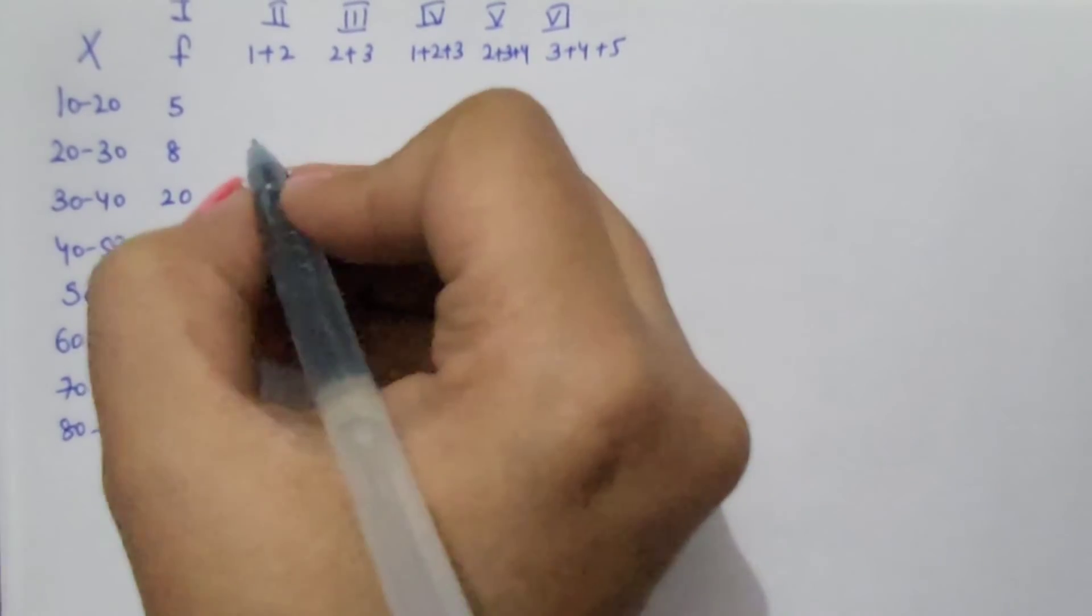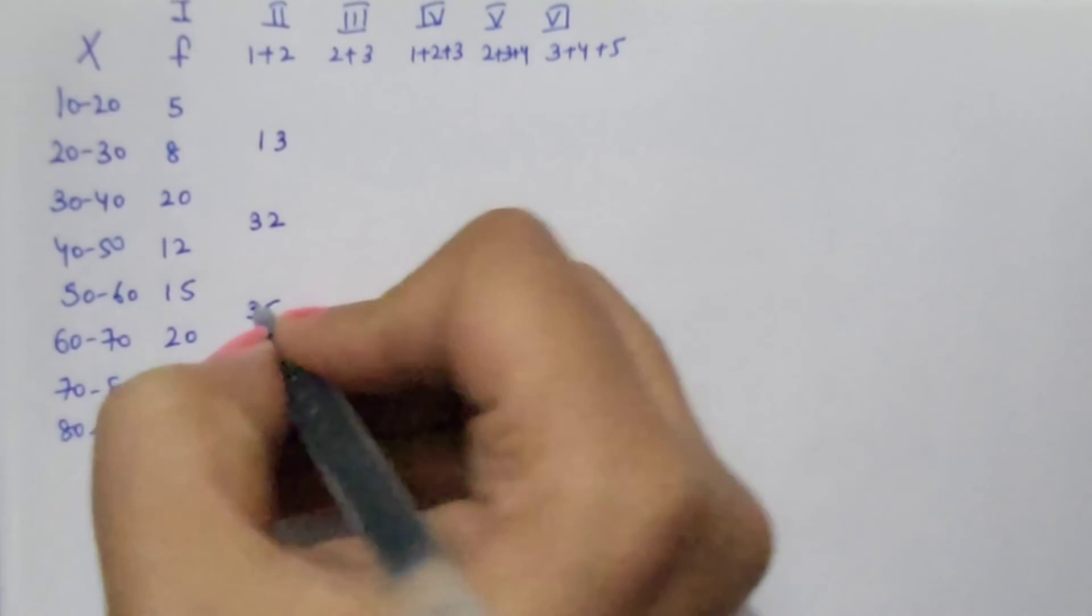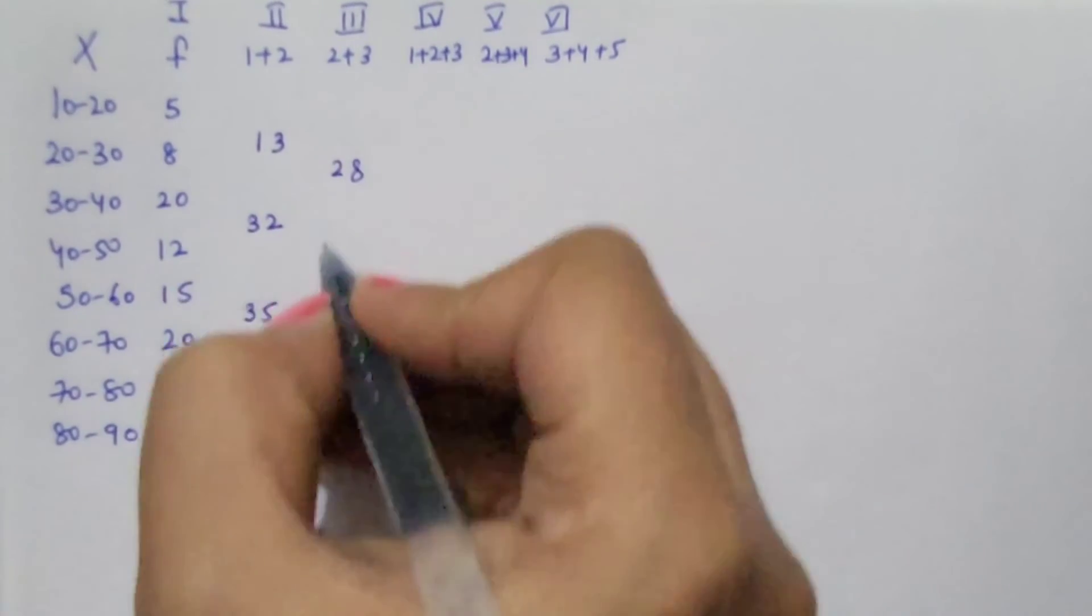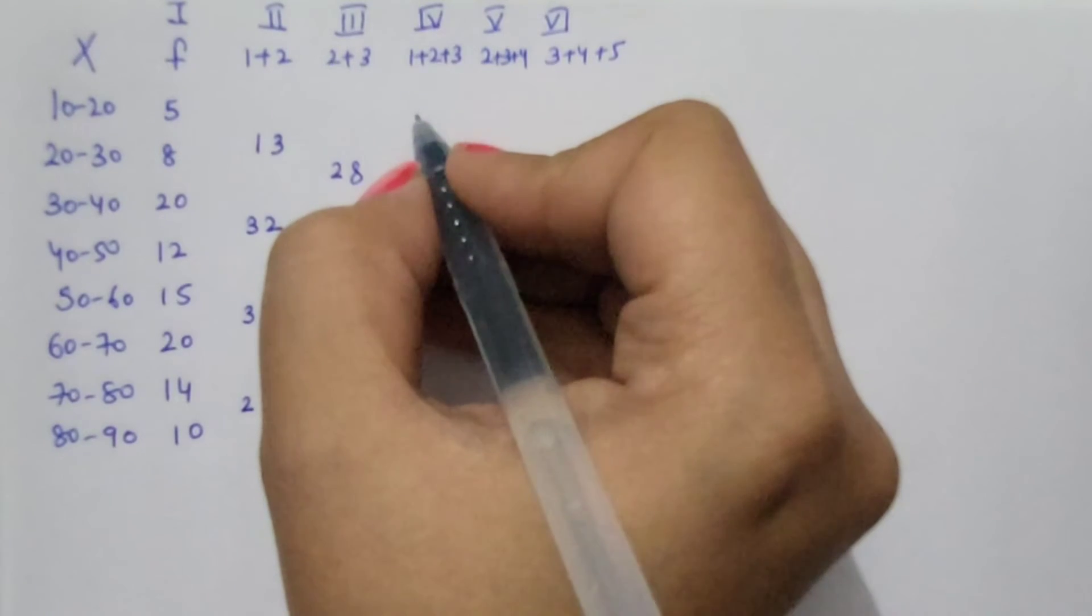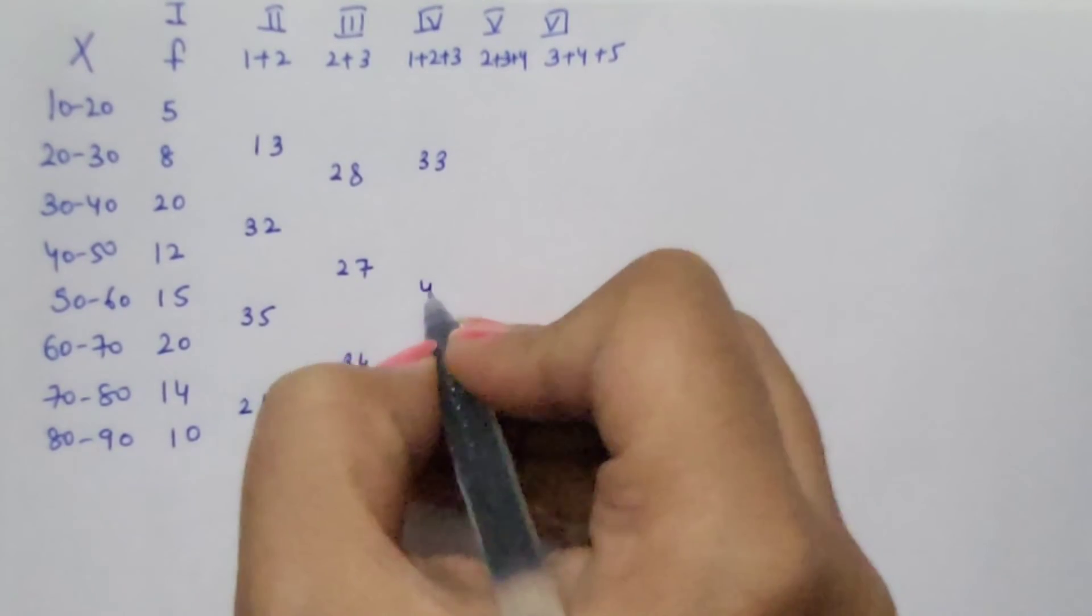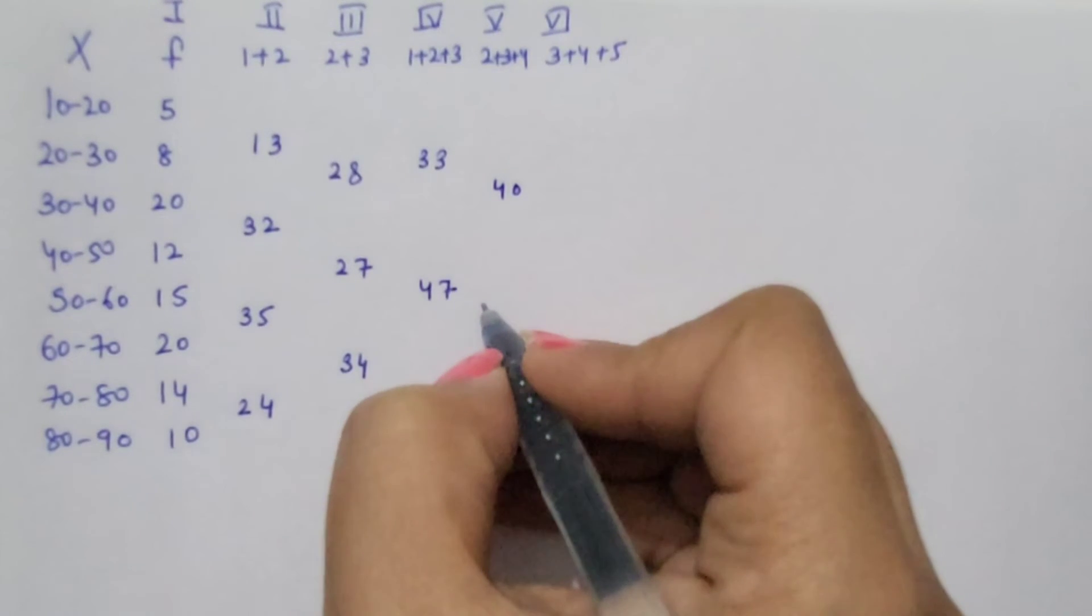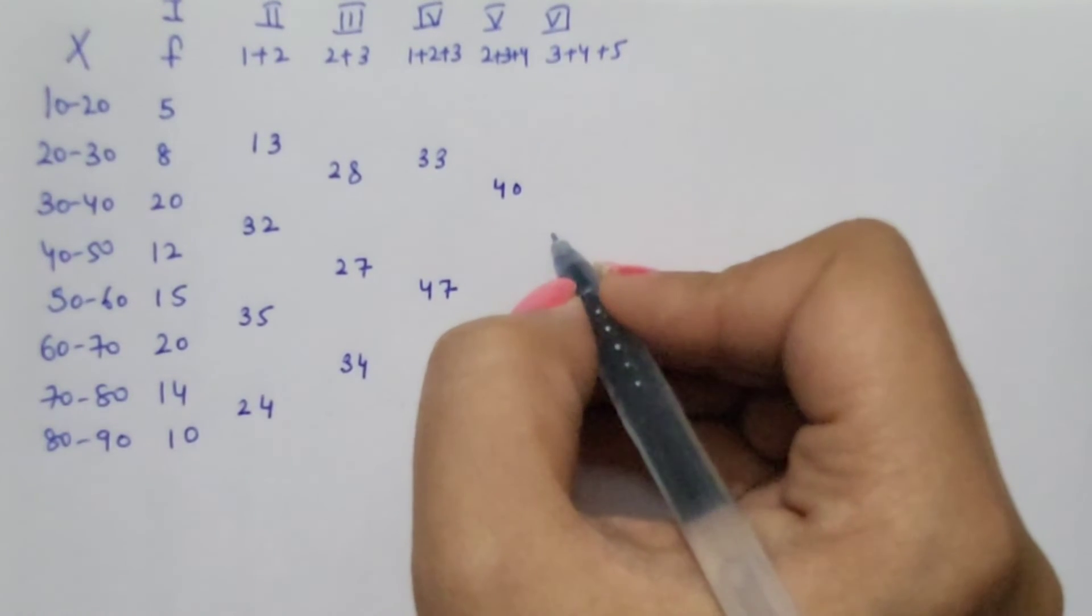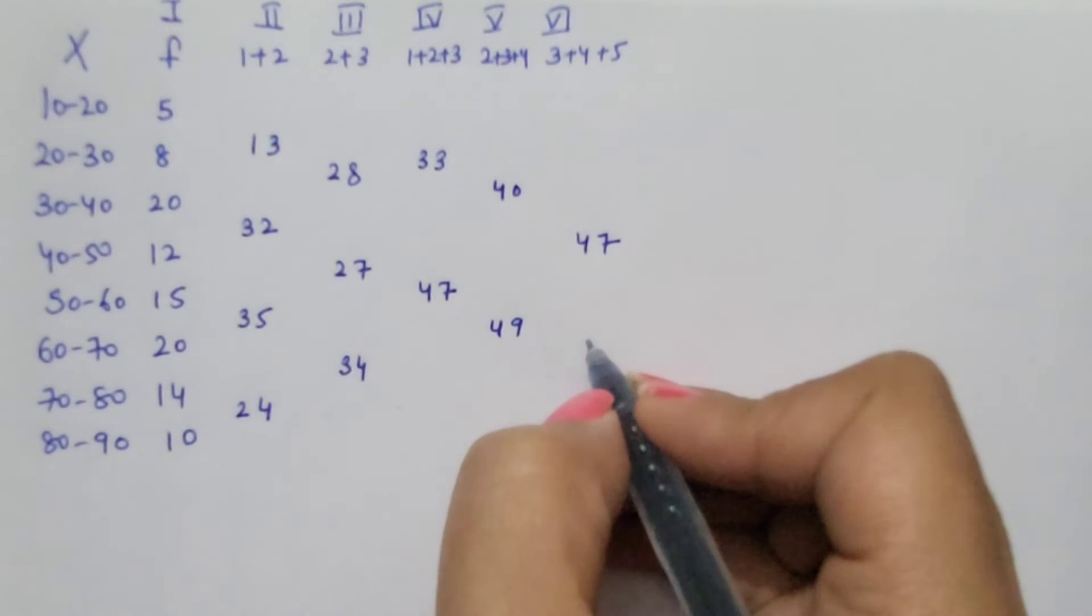First and second item: 5 and 8, that is 13. 20, 12 is 32. 15, 20 is 35. 14, 10 is 24. Same as 2 plus 3: 8 plus 20 is 28, this is 27 and this is 34. 1 plus 2 plus 3 is 33 and then it is 47. Next, 8, 12, 20 is 40 and next is 49. 3 plus 4 plus 5, it is 20, 12 and 15, this is 47 and next is 44.